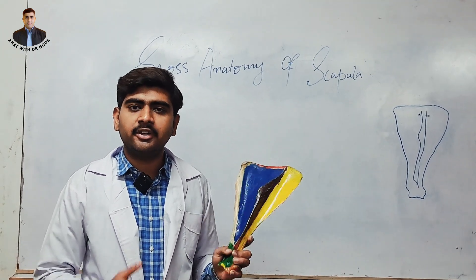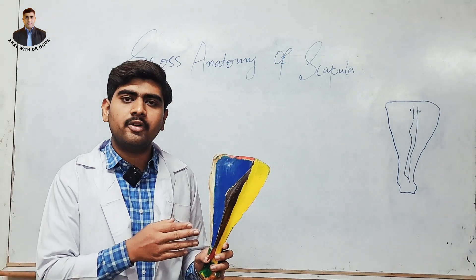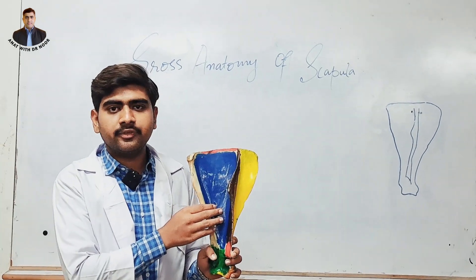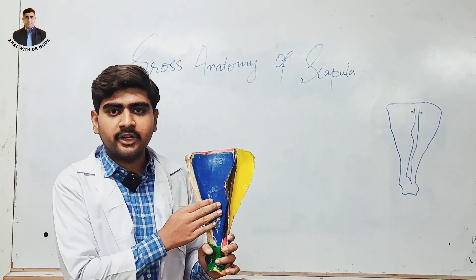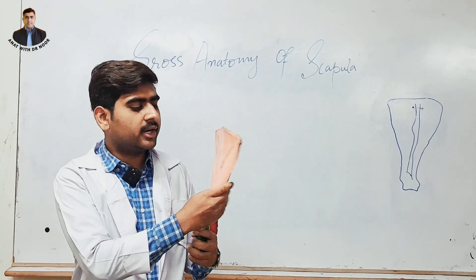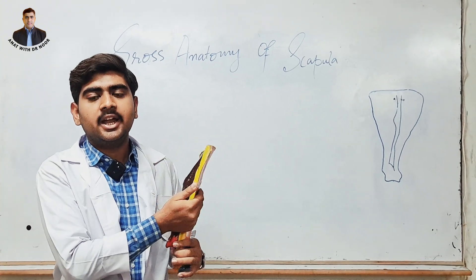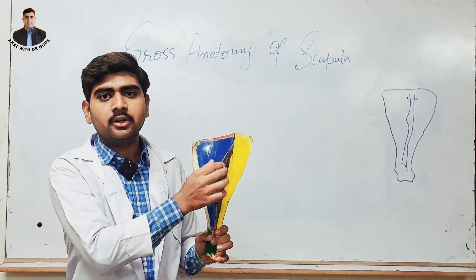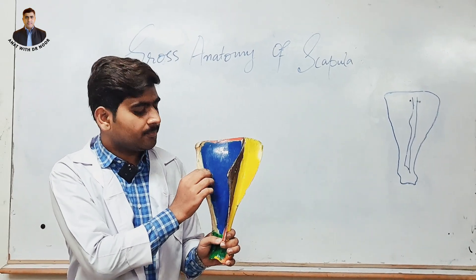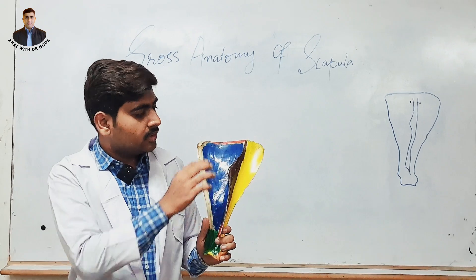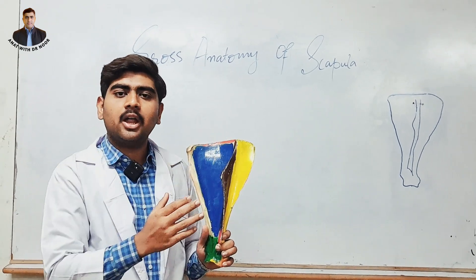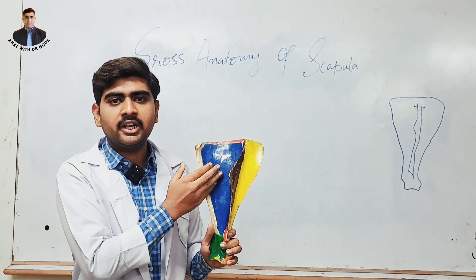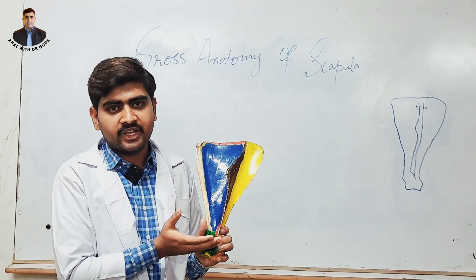Scapula is a flat, triangular bone and part of the pectoral girdle. There are two surfaces in the scapula: the lateral surface and the medial surface. There are three borders — cranial border, caudal border, and dorsal border — and also three angles: cranial angle, caudal angle, and ventral angle.